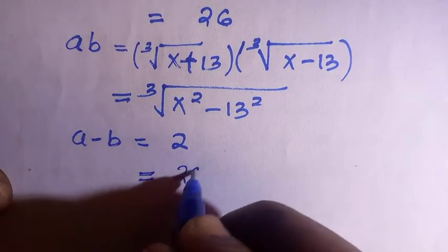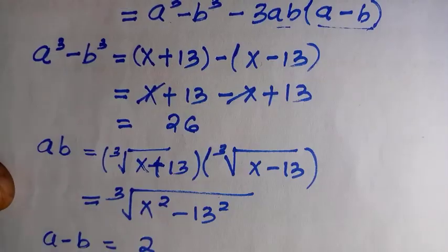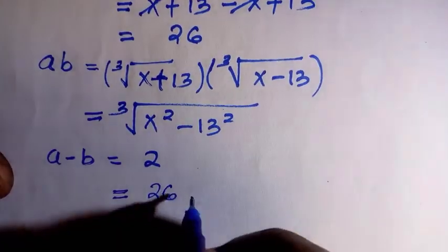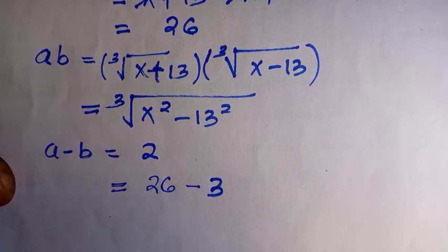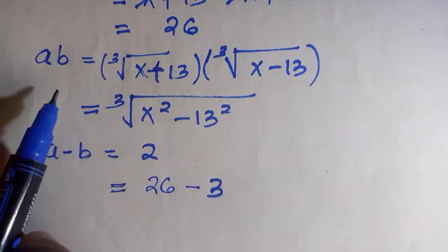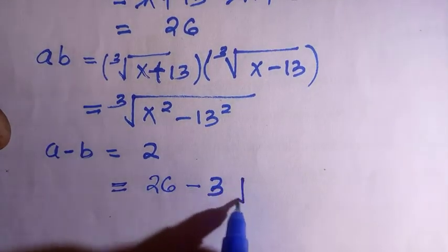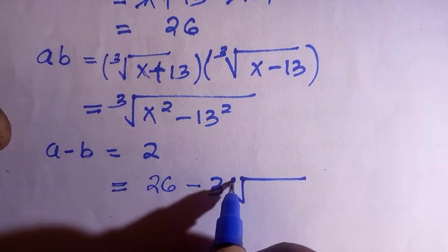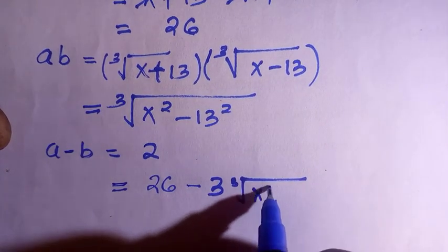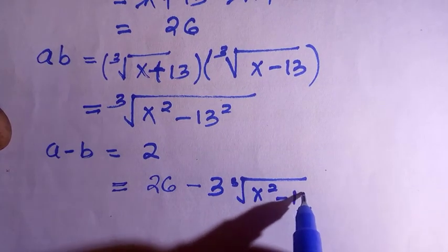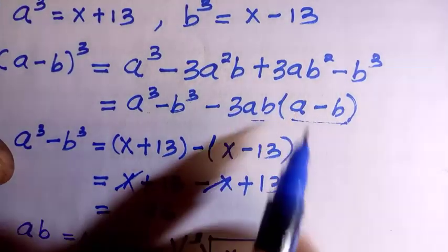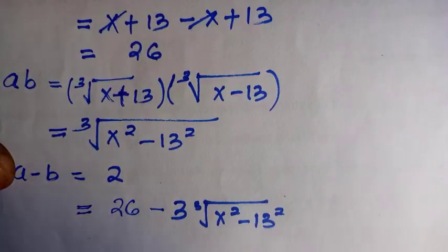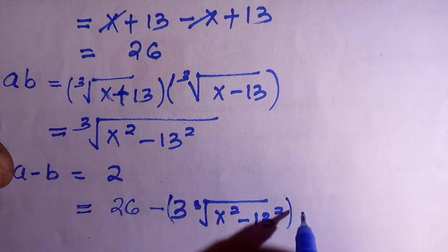Now we have all the ingredients. Plugging into the identity (a minus b)³ = a³ - b³ - 3ab(a - b): the left-hand side is 2³, the difference a³ minus b³ is 26, and then minus 3 times ab — which is the cube root of (x² minus 169) — times (a minus b), which equals 2.